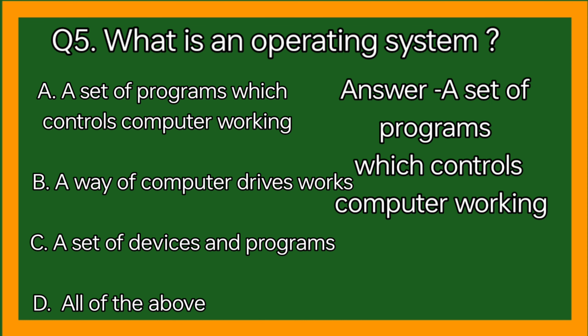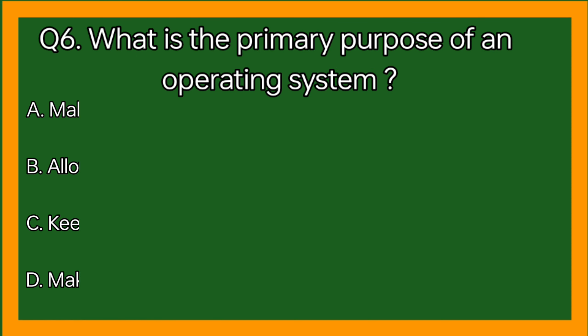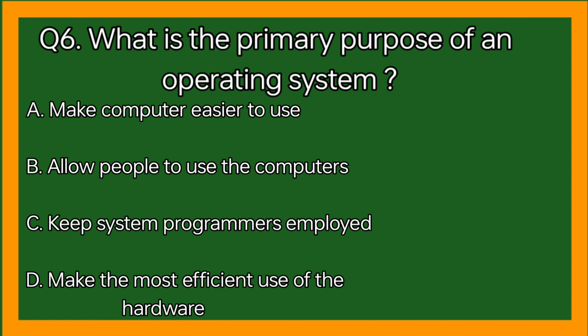Correct answer: A set of programs which controls computer working. Question 6: What is the primary purpose of an operating system? Option A: Make computer easier to use, option B: Allow people to use the computers, option C: Keep system programs employed, option D: Make the most efficient use of the hardware.